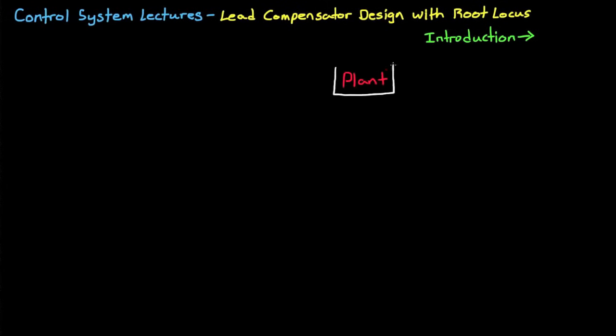Let's say that you're designing a system and you already have a model of your open-loop plant. You might have developed your model from your real physical system using a method called system identification, or you might have just been given a transfer function from your professor as a good example. Either way, the methods for designing a lead compensator are the same.